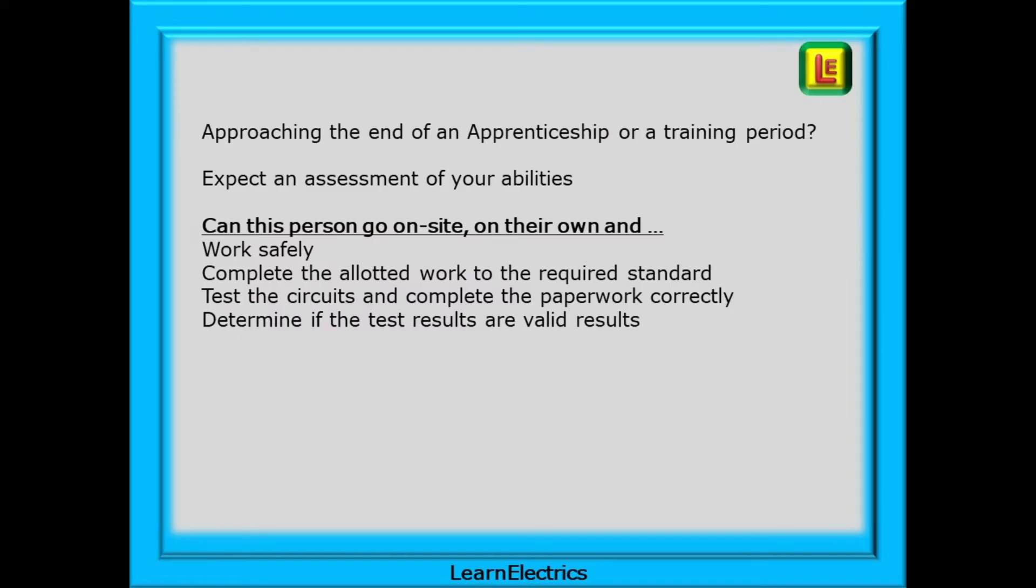The ability to do this is an essential skill for any good electrician, and understanding what you are doing is so important if you are approaching the end of an apprenticeship. For example, when completing your AM1 or AM2 or any other training period, such as testing and inspection courses or initial verification, you will be required to pass an assessment of your abilities.